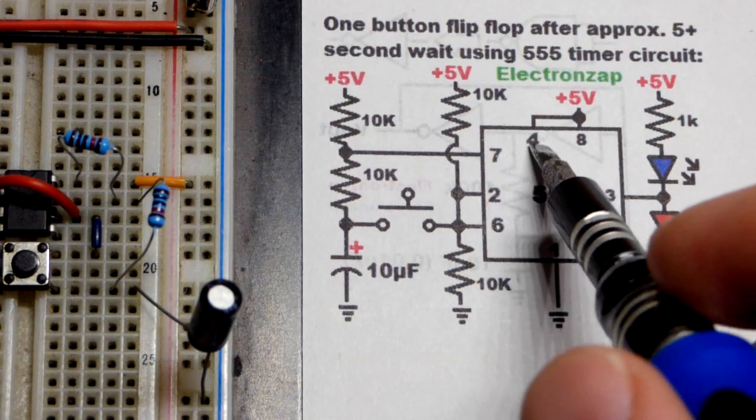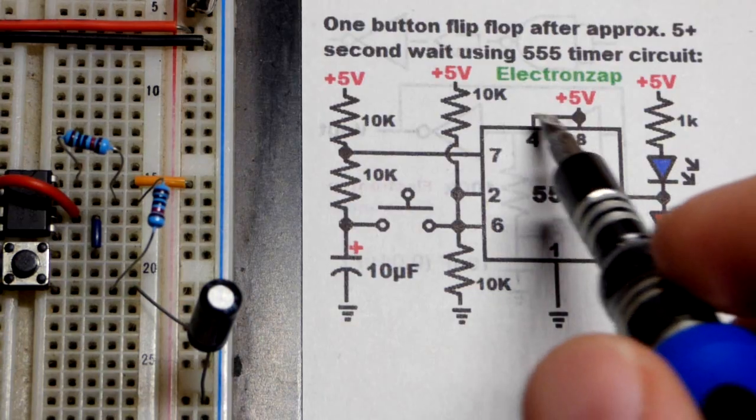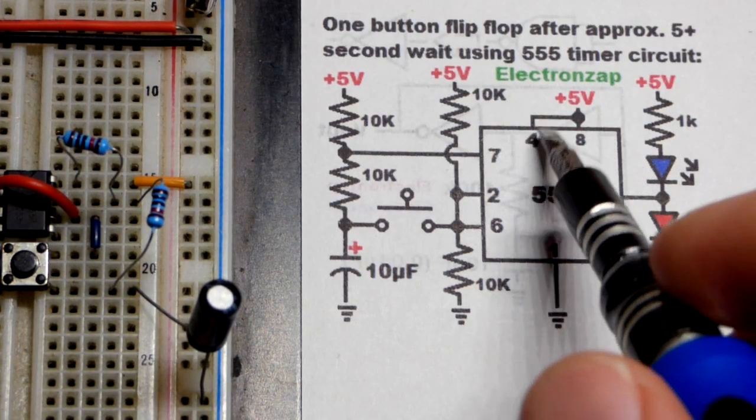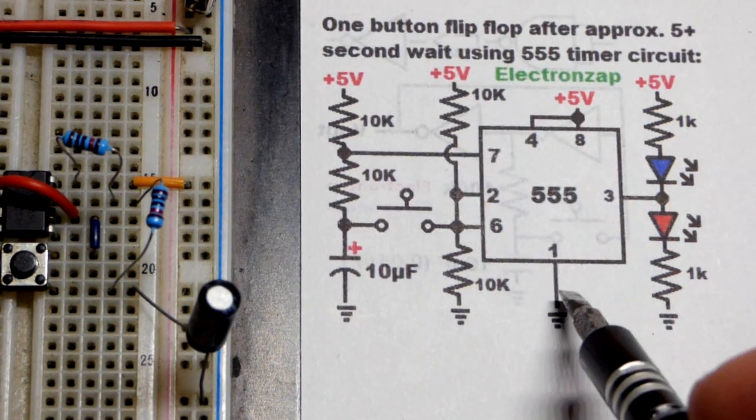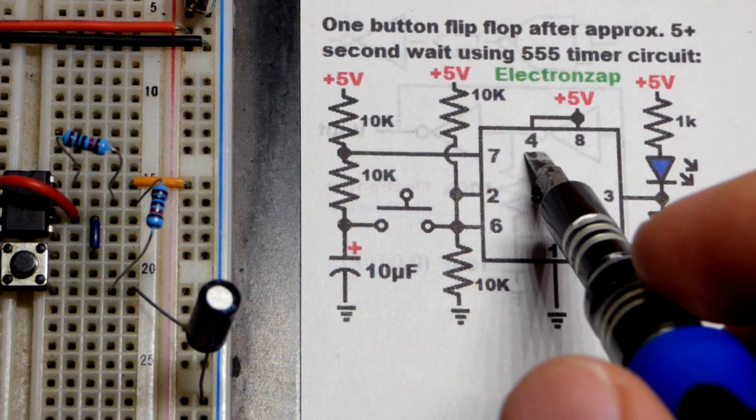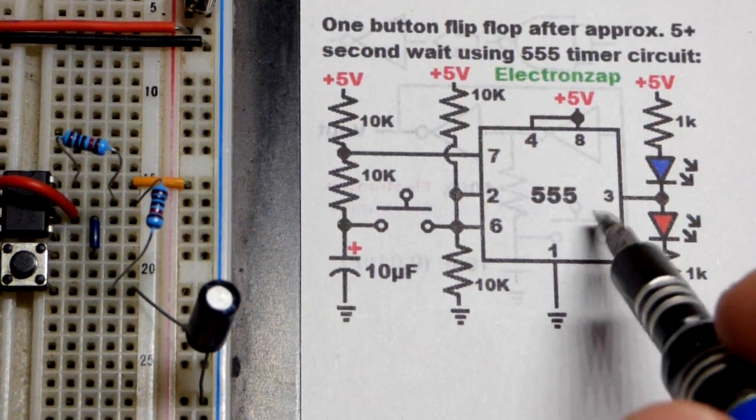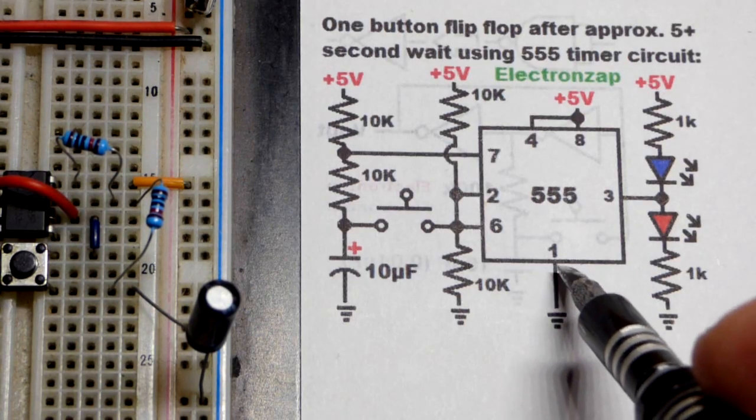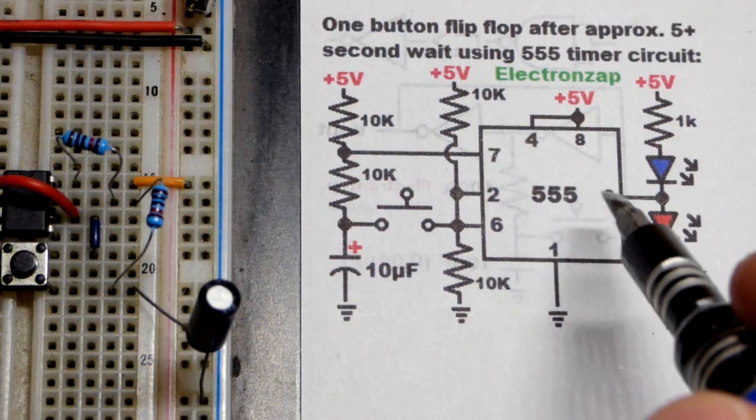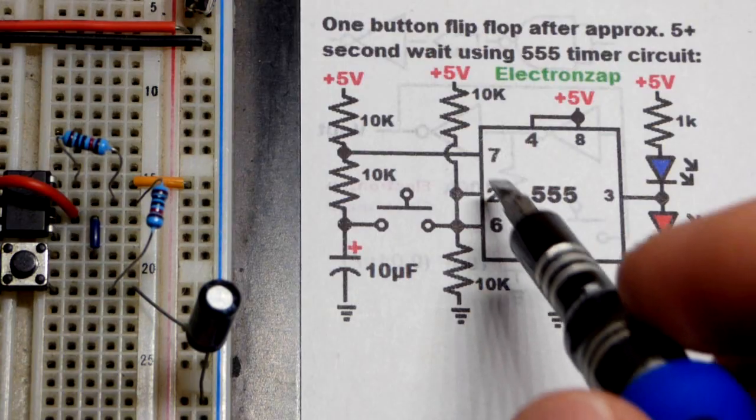So now pin 4 is the reset pin. We don't want it to do anything, so we put it to the positive supply. It's waiting for a voltage closer to ground right there. If it gets a low enough voltage, it sets the output low no matter what. It's the most powerful input, and it will stay low as long as it has that low input. So we're disabling it.